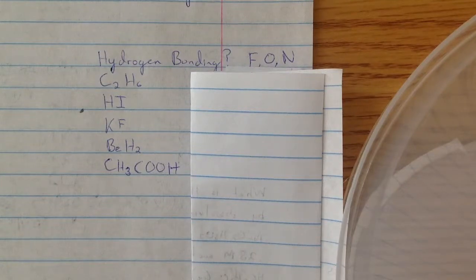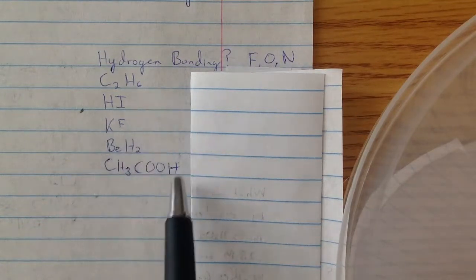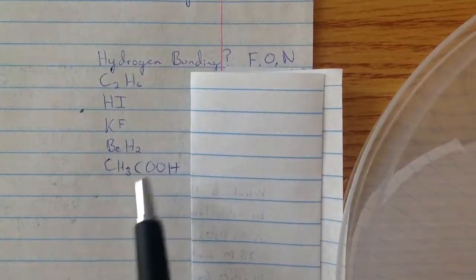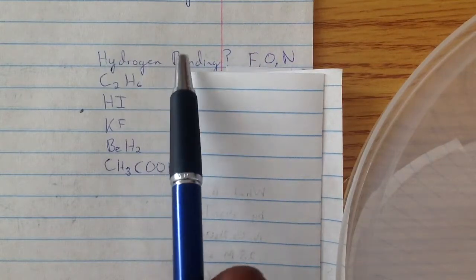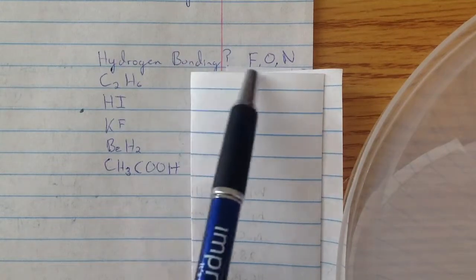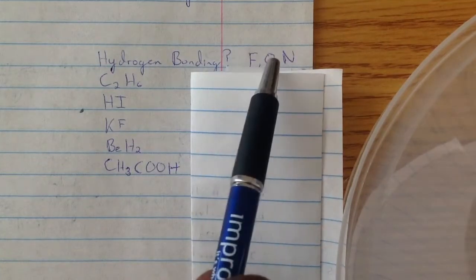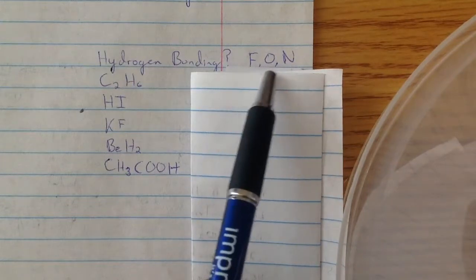So, in this question, it is which of these have hydrogen bonding with themselves? The most important thing to remember about hydrogen bonding is that hydrogen bonding only occurs with these three elements: fluorine, oxygen, and nitrogen.